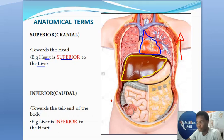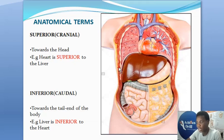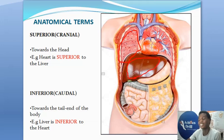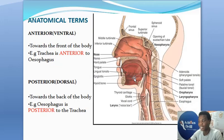Let's take another example. The structures you're seeing right here are the lungs. How will you describe the lungs in relation to the liver? The lungs are definitely superior to the liver, while the liver is inferior to the lungs.